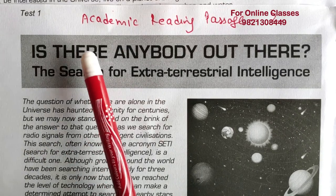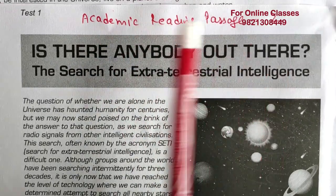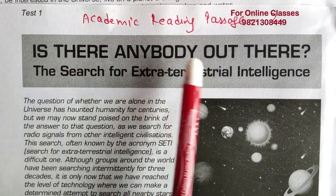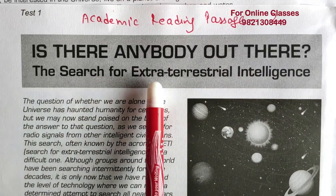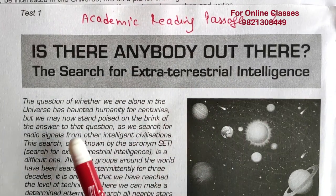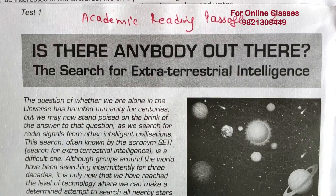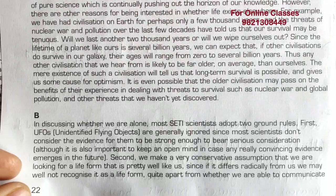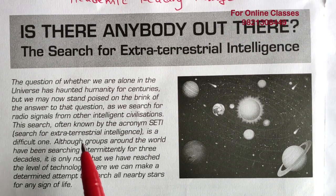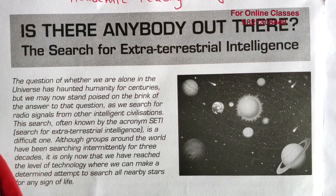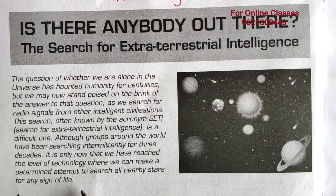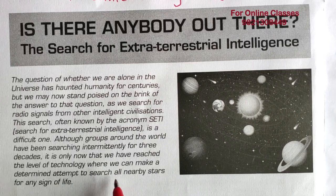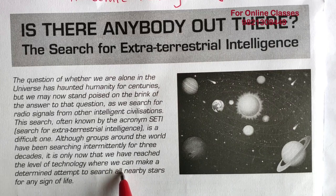This is the reading we will be doing in this video: academic reading passage 2 from test 1. The book is IELTS 9. The title of the passage is 'Is There Anybody Out There? The Search for Extraterrestrial Intelligence.' The paragraph has been divided into big paragraphs like A, B, and so on. There is also an extra paragraph given — we should read it because there may be answers hiding in it.